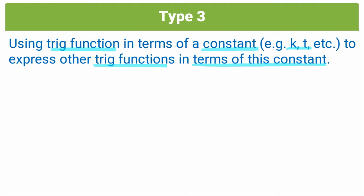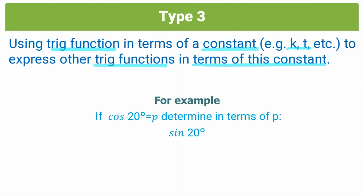So what would an example of a type 3 trig question look like? Here we are given an example: if cos 20 degrees equals P. You can immediately see that P is a letter of the alphabet and it's a constant. We have a trig function, cos 20 degrees, set equal to P, and we are asked to determine the value of another trig function, sine 20 degrees, in terms of this constant.